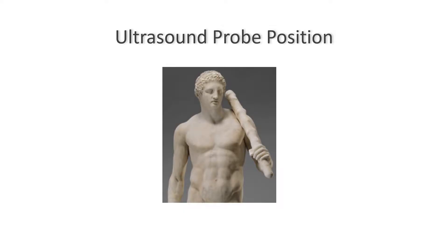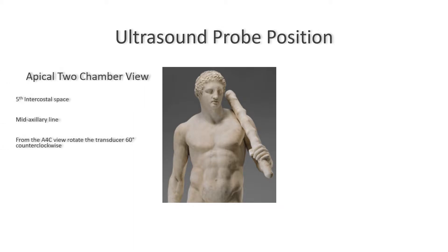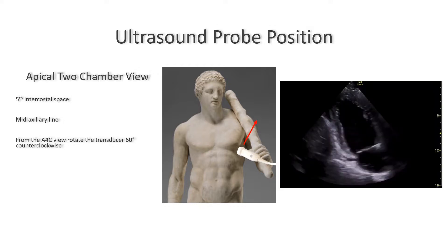Let's talk about the ultrasound probe position. The apical two chamber view is actually pretty straightforward to acquire once you have the apical four chamber view. From the four chamber view you just need to rotate approximately 60 degrees counterclockwise to demonstrate the apical two chamber view, and you should be getting an image with only the left side of the heart visible.